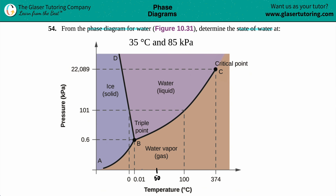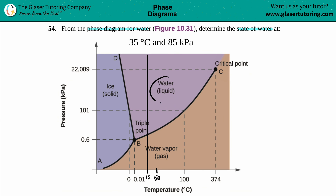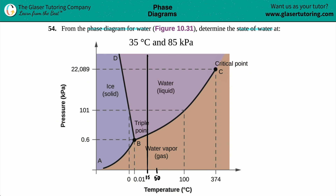So 25 would be in between 0 and 50, meaning 35 degrees Celsius would be around here. I'll draw a straight line up so we can see it. For 35 degrees Celsius, water can either be a liquid — in the light purple region — or a gas, but it's not going to be a solid.